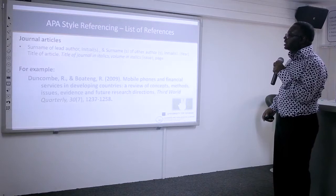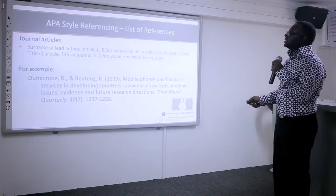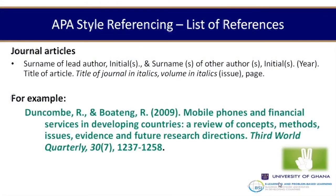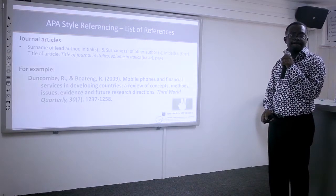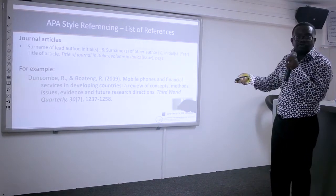For journal articles: write the surname and initials of the lead author, surname and initials of other authors, year, title of the article, then the title of the journal in italics, the volume number in italics, the issue number in parenthesis, and the page numbers. For example: Aborin — 'Mobile Phones and Financial Services in Developing Countries: A Review of Concepts, Methods, Issues, Evidence and Future Research Directions.' Third World Quarterly, volume in italics, issue in parenthesis, then page numbers.